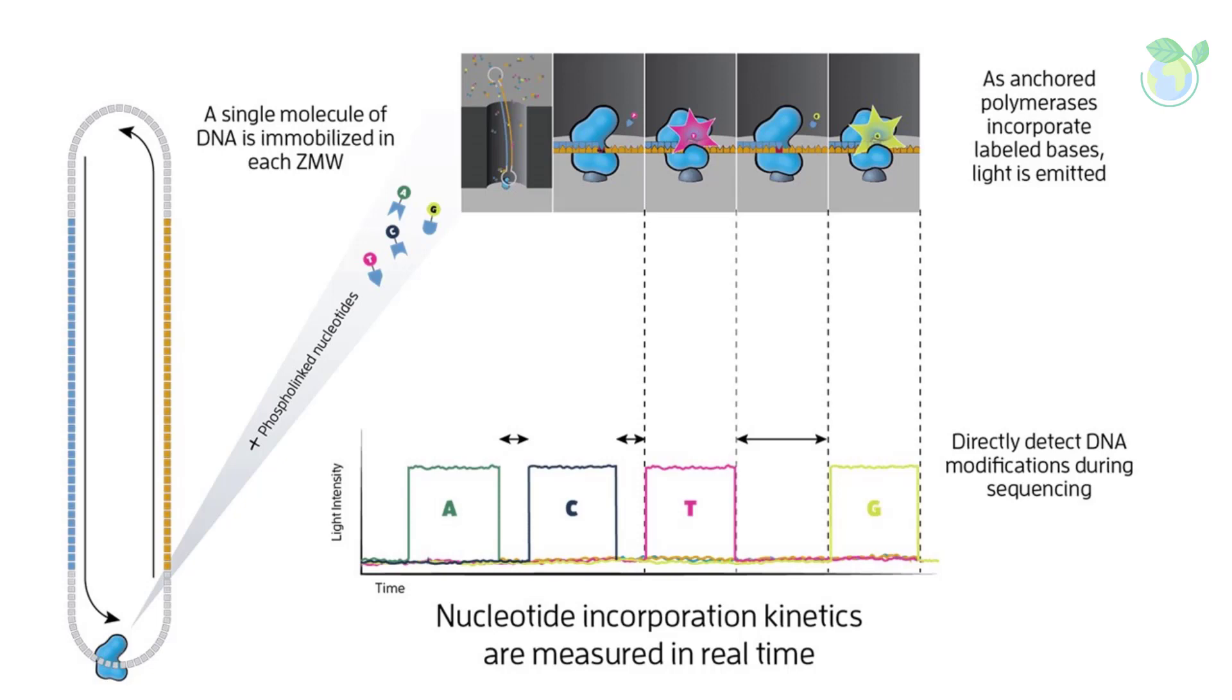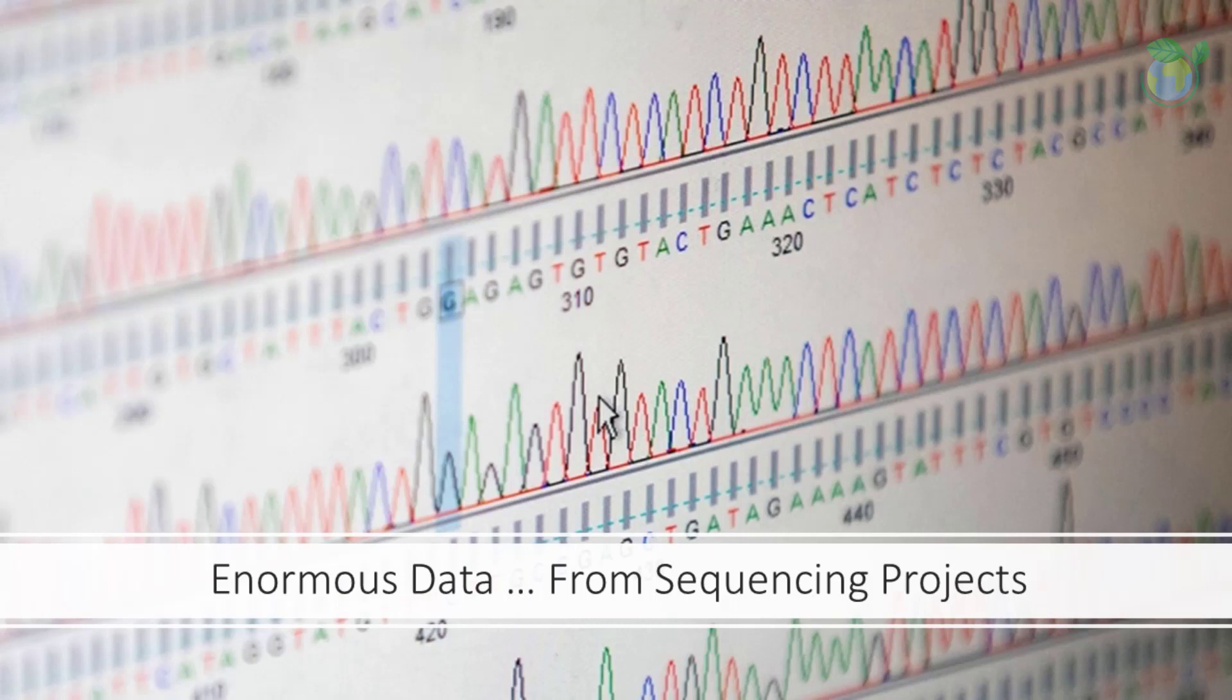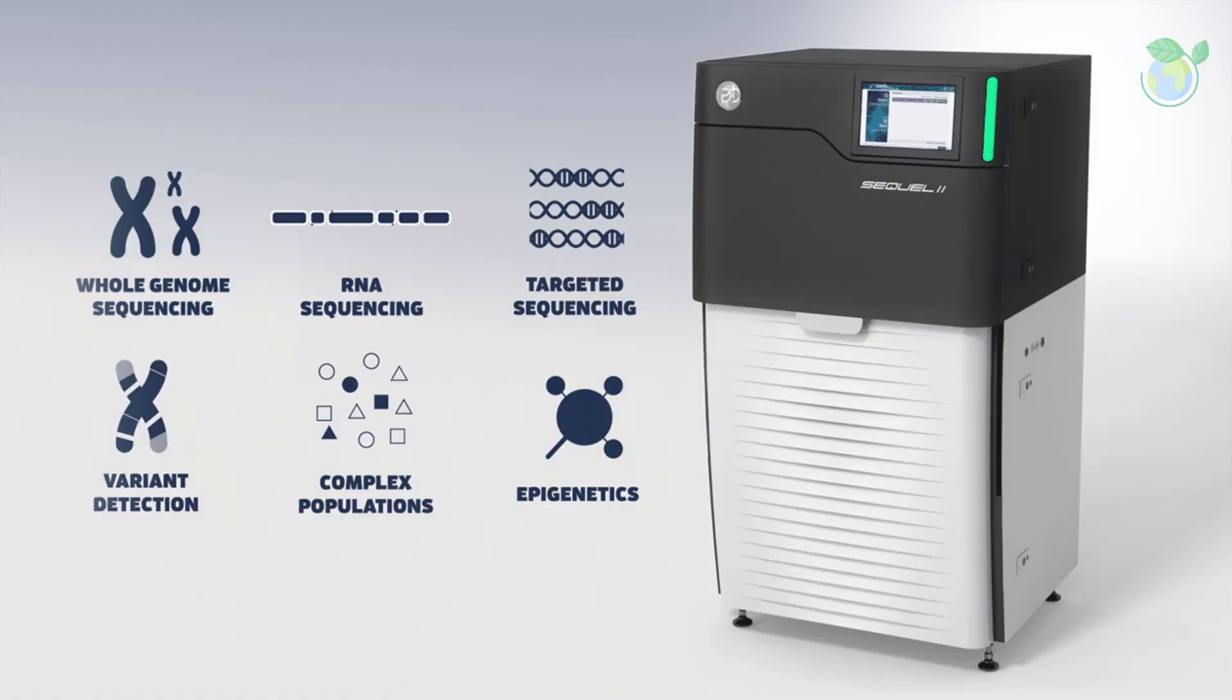Short read sequencing produces reads 50 to 500 base pairs in length, which can lead to sequence gaps and incomplete assemblies, known as draft genomes. In contrast, highly accurate long read sequencing from PacBio produces reads tens of kilobases in length, creating overlaps, which allow for the generation of complete genome assemblies.